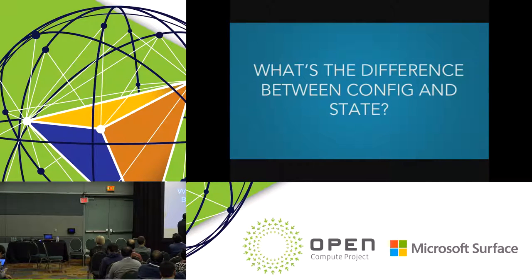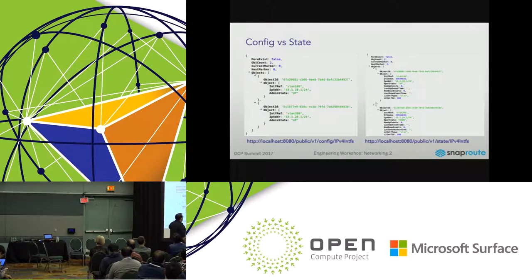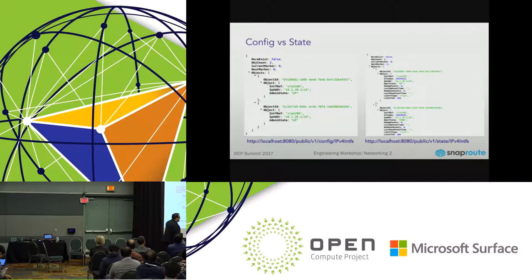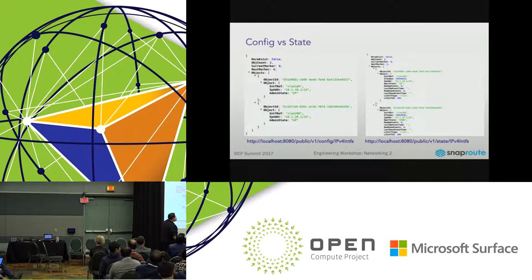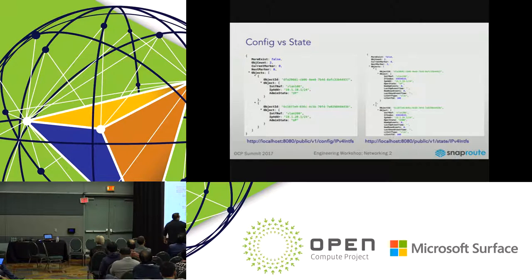Finally, the difference between config and state in FlexSwitch. There are two different sets of parameters for any object. On the left is config — what we've configured. Stored completely separately in the database is state — which gives you all the running information. For example, vlan 200 is not operationally up; it's down because it had no interfaces associated with it.